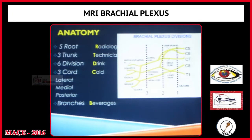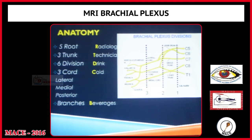The brachial plexus arises from the lower cervical cord and upper thoracic nerve. It has five roots, three trunks, six divisions, and three cords — remembered by the mnemonic 'Radiology Technicians Drink Cold Privileges' (RTDCB). The five roots arise from C5, C6, C7, C8, and T1. C5 and C6 join to form the upper trunk in the interscalene triangle, C7 continues as the middle trunk, and C8 and T1 continue as the lower trunk.